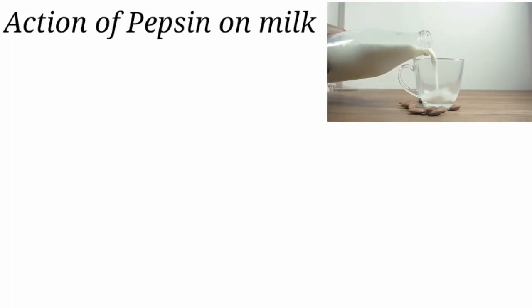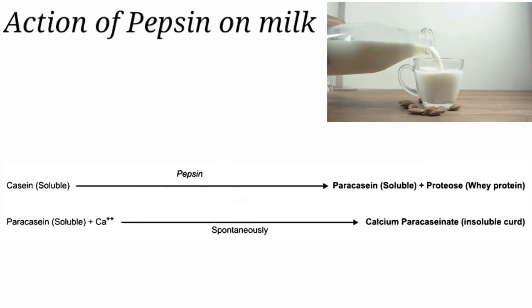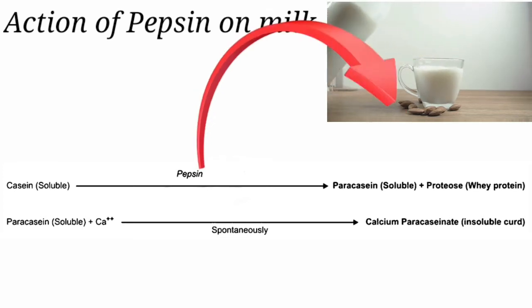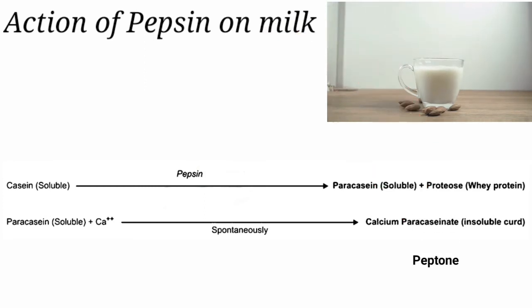Action of pepsin on milk. Pepsin acts on the milk protein casein and converts it into paracasein. This paracasein reacts with calcium to form calcium paracaseinate, which is a precipitate. Pepsin then acts on this calcium paracaseinate and converts it into peptones.